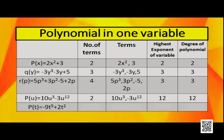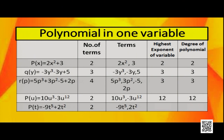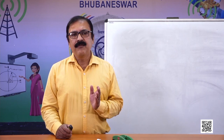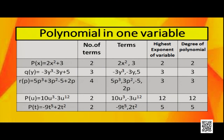For p(u) equal to 10u cubed minus 3u to the power 12, the number of terms is 2: 10u cubed and minus 3u to the power 12. The highest exponent is 12, so the degree of this polynomial is 12. For p(t) equal to minus 9t to the power 5 plus 2t square, the number of terms is 2: minus 9t to the power 5 and 2t square. The highest exponent is 5, so the degree is 5. In all these cases we have one variable only, so these are called polynomials in one variable.